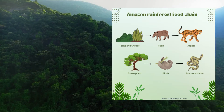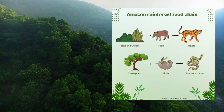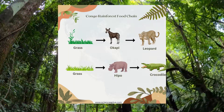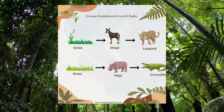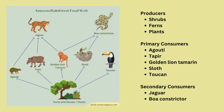Here are some food chains from the Amazon rainforest. In the Amazon rainforest food web, producers such as shrubs, ferns, and other plants provide the foundation for the ecosystem, while primary consumers such as agouti, tapir, golden lion tamarin, sloth, and toucan rely on them for food, and are in turn preyed upon by secondary consumers like jaguars and boa constrictors.